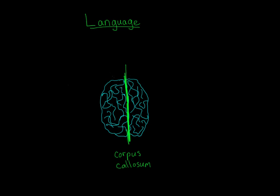Assuming that language is centralized in the left hemisphere, this means that the right side of your brain can't connect to the language side. Anything that you perceive in the right side of your brain can't be named or dealt with in terms of language. You may have heard that your brain has a contralateral organization, meaning that information you perceive in your left visual field gets processed by the right side of your brain, and vice versa.